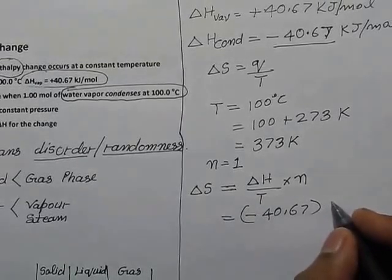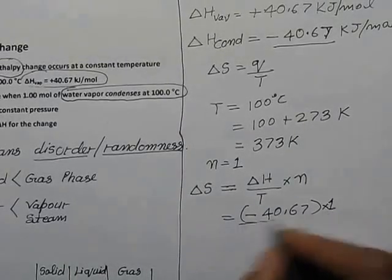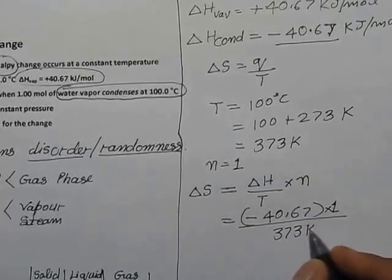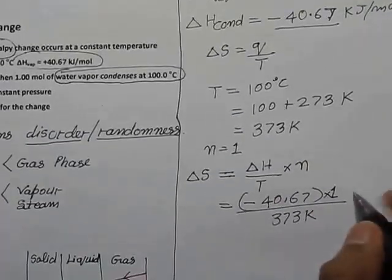Number of moles is equal to one, divided by temperature which is 373 Kelvin. And the units: if we use this one here, kJ with small k for kilojoule per mole and one mole of water.